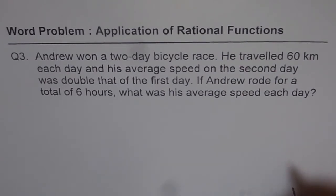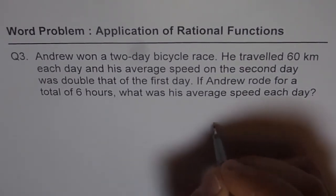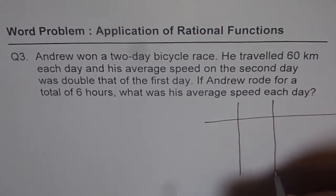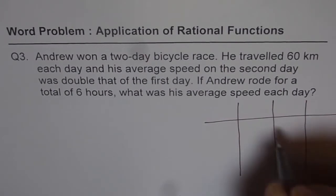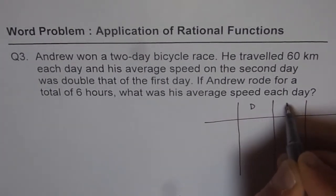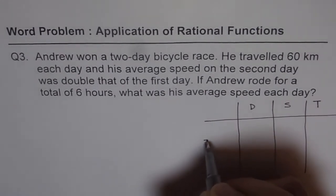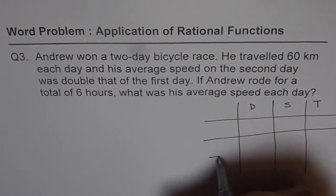So for any distance, time, speed problem, I recommend making your table like this, which relates distance, speed, and time. We will have 3 columns here: one for distance, one for speed, and the other one for time. And then 2 rows. These 2 rows normally will give you 2 events.